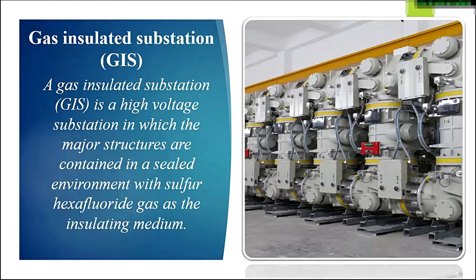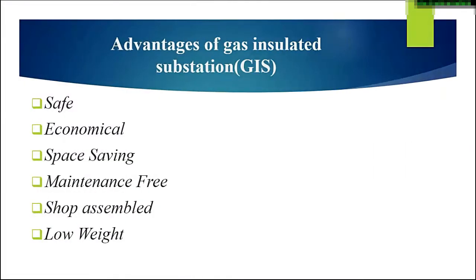The advantages of GIS substation are: safe, economical, and space saving. Space saving is the biggest advantage because a GIS substation requires only 10% of the space compared to an AIS substation — the whole transmission substation can fit into a single room, making it a great advantage for urban areas. GIS is also maintenance free and comes shop assembled and shop tested, with very low weight of the switchgear modules.